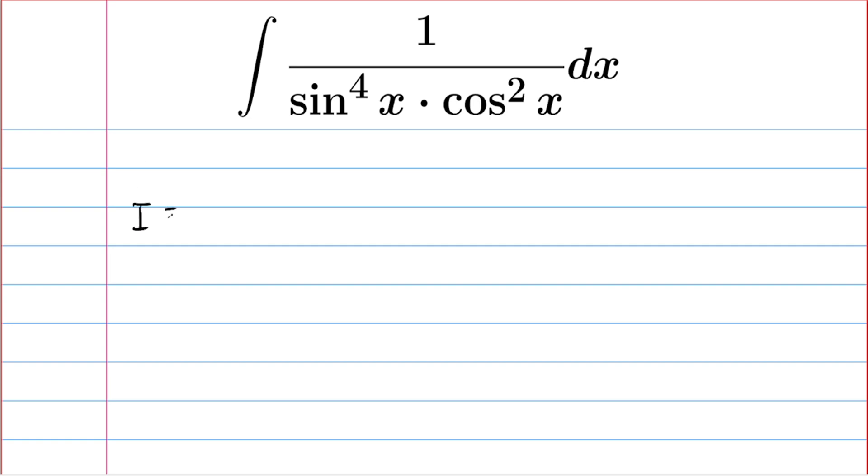I see we have 1 over cos square x, so I'm going to write it as sec square x by sine to the power 4x dx. Now I'm going to convert everything in terms of tan so that I can substitute tan x equal to t.